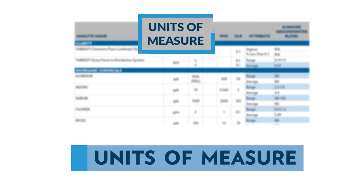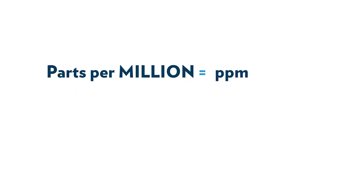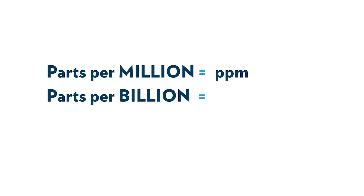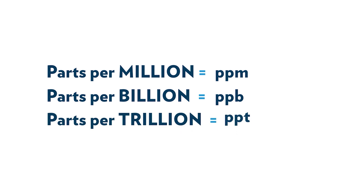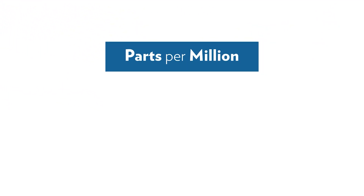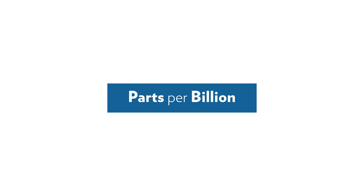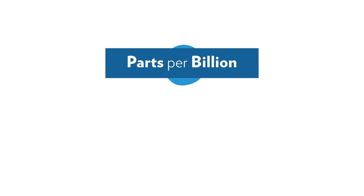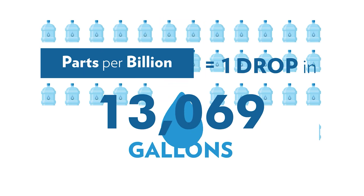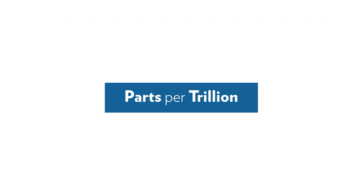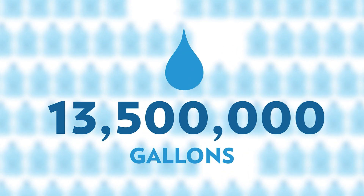The Units of Measure column indicates how the contaminant levels are measured. You might see parts per million (PPM), parts per billion (PPB), or parts per trillion (PPT). Parts per million, or milligrams per liter, is equal to approximately one drop in 13.6 gallons. Parts per billion, or micrograms per liter, is equal to approximately one drop in 13,500 gallons. Parts per trillion, or nanograms per liter, is equal to approximately one drop in 13,500,000 gallons.